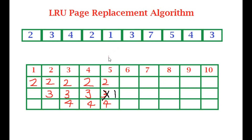Notice that two is already here — although it is the oldest page, three is the oldest used page, so one replaces three. Next, three wants to come in again. As you can see, two is the second youngest used, one is the youngest, and four is the oldest — the least recently used. So we cancel out four and write three here.